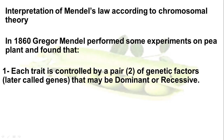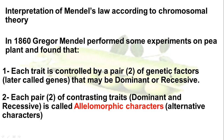These genetic factors may be dominant or recessive. Dominant means it dominates the other gene — if it occurs, its effect will appear no matter what. Recessive means that it will be dominated by another gene unless we don't have a dominant gene; if both genetic factors are recessive, their effect will appear. Each pair of contrasting traits — dominant and recessive — are called allelomorphic characteristics or alternative characteristics.